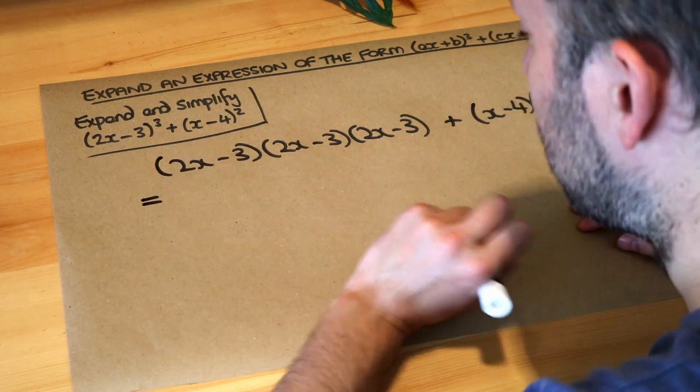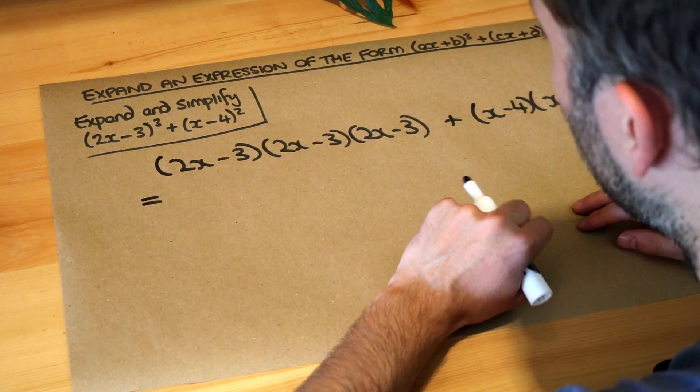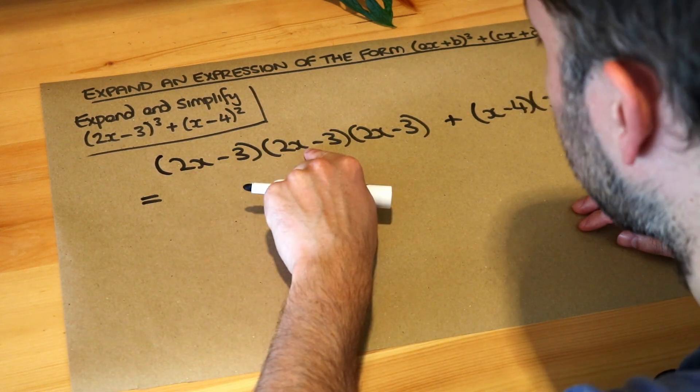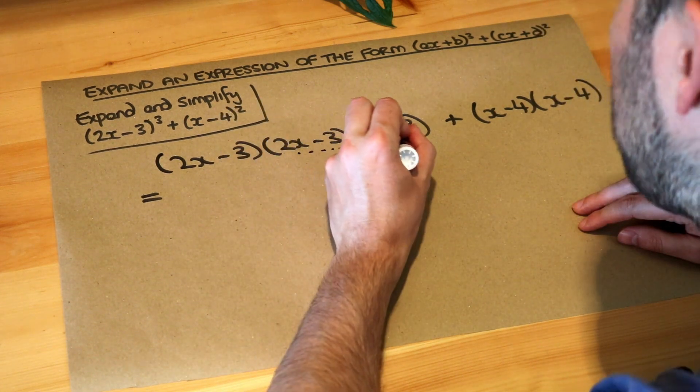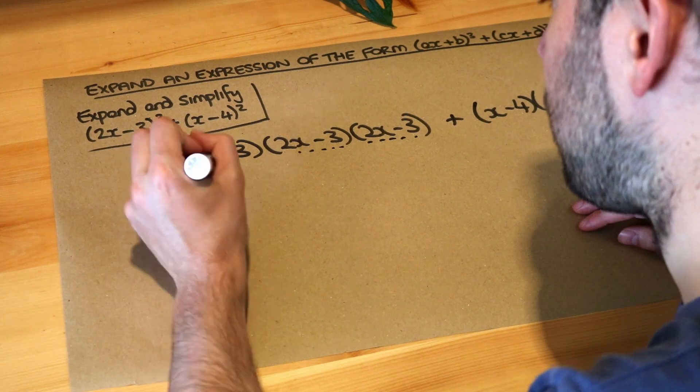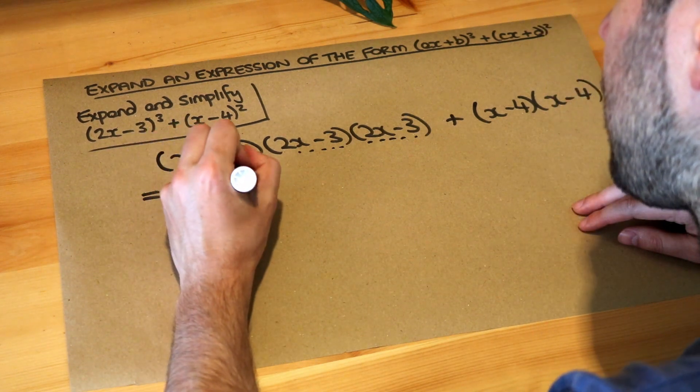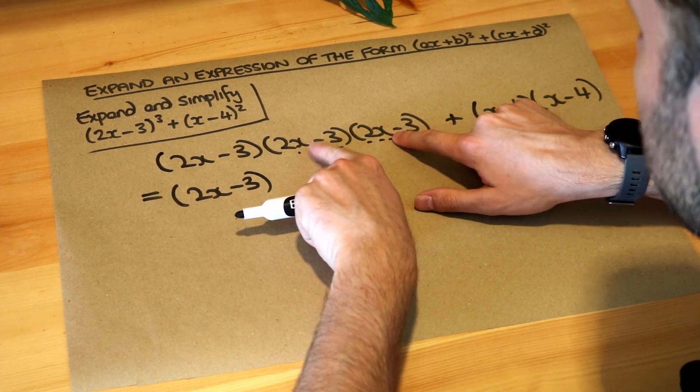So we do what we usually do when we expand three brackets. You can either do the first bracket times the second first or you can do the second times the third. I'm just going to do the second times the third but it really doesn't matter. So we've got (2x-3) at the front there and then we're going to multiply these two brackets out.